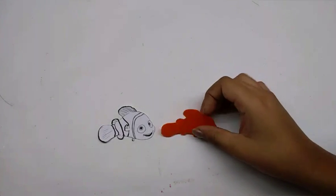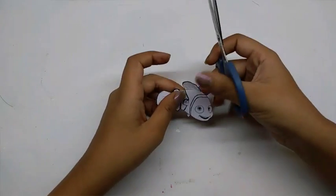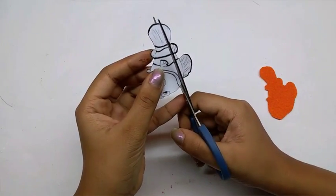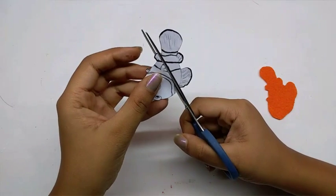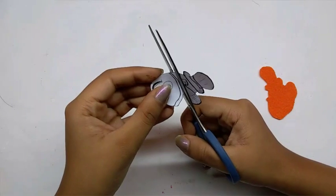I have traced and cut out the Nemo shape. Now I am going to cut out the white stripe, the area which has white color on it. So I am just going to cut it out, the white stripes and the eyes, and then trace them out on white felt sheet and cut them out.